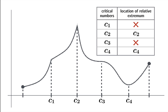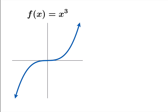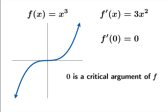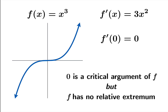Every relative extremum is a critical number, but not every critical number gives you a relative extremum. Here's an explicit example: the cubing function f(x) = x³. The derivative is 3x², which is zero when x = 0 — that's where the tangent slope is flat and horizontal. But it's not a relative maximum or minimum. So zero is a critical argument of f, but f has no relative extrema at all.